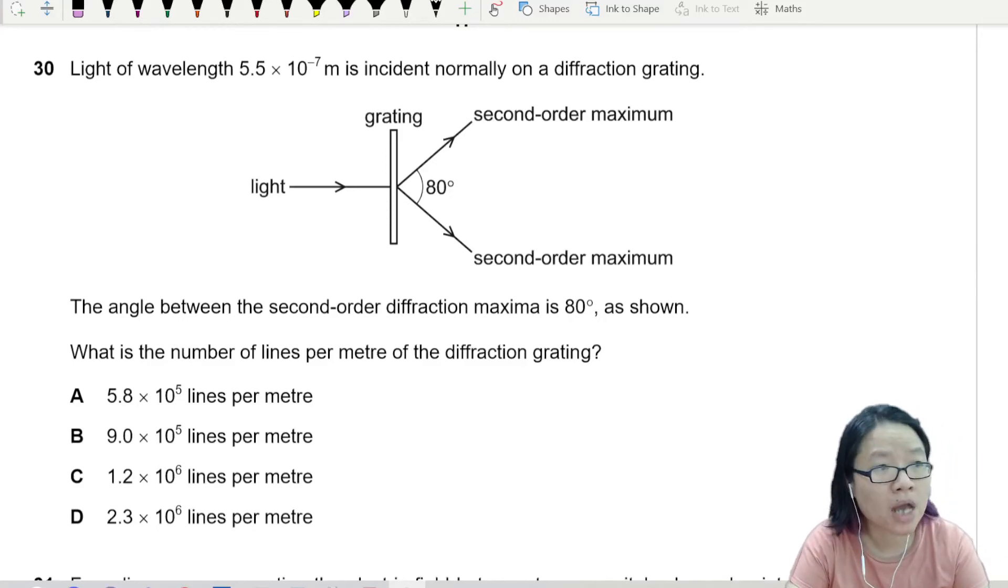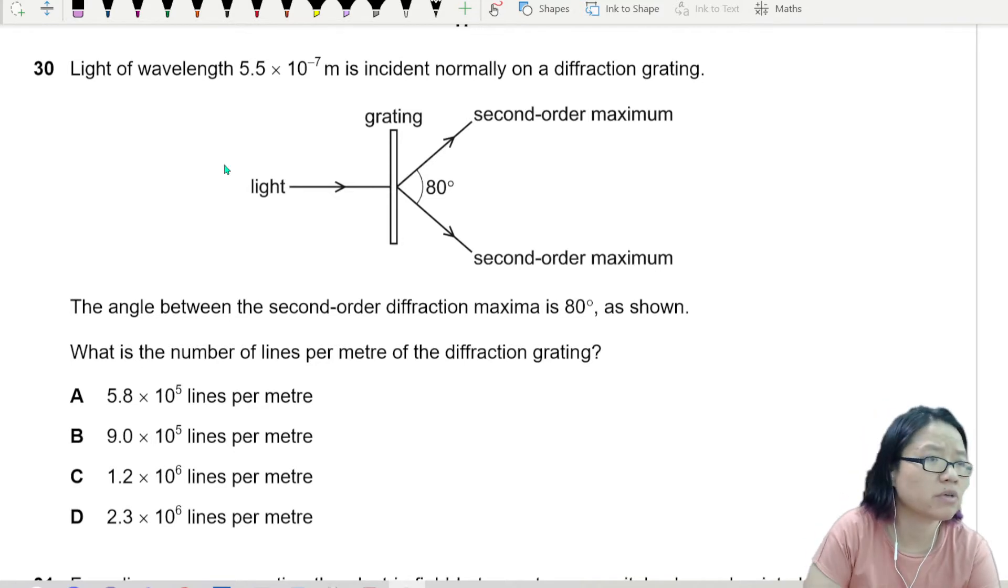Alright, question 30. Light of wavelength 5.5 × 10^-7 meters - so we got this lambda - is incident normally on a diffraction grating.